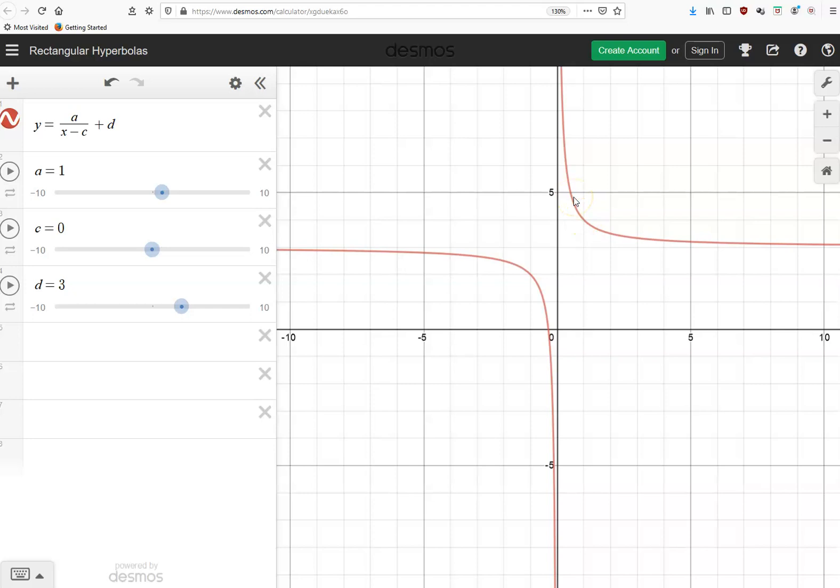So d is a vertical translation up if it's positive. If d is negative, d is a vertical translation down. And that's exactly the same as what happens with all the other transformations of other functions that we've learned.